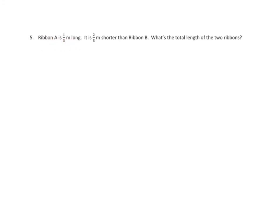A ribbon A is one-third of a meter long. It is two-fifths shorter than a ribbon B. What's the total length of the two ribbons? All right, I'm going to represent this one a little bit differently. We have ribbon A is one-third. Ribbon B is going to be that one-third. And we're going to have the two-fifths because ribbon B is longer than ribbon A. Let's erase that and make a nice-looking five.